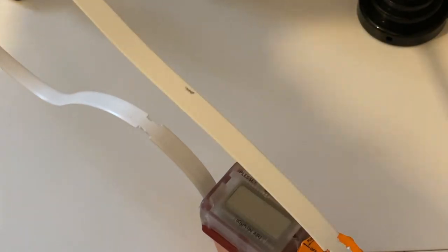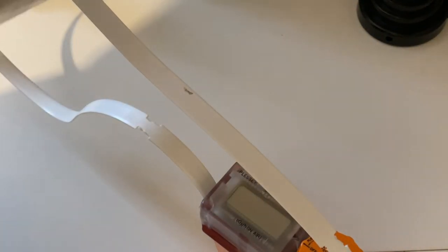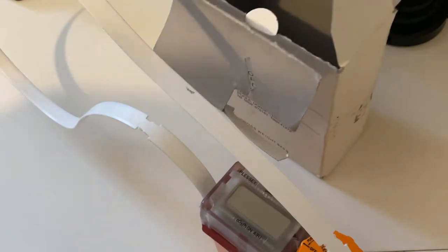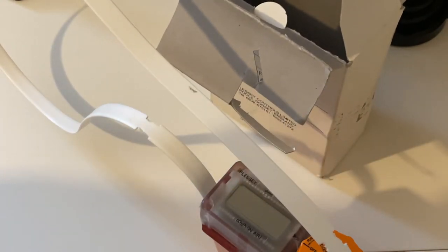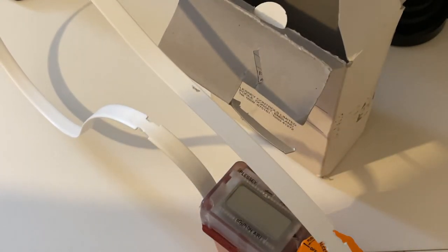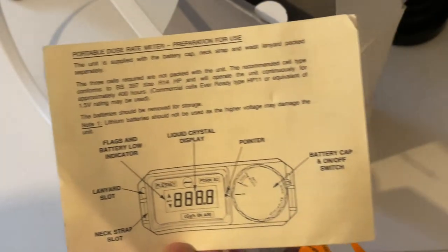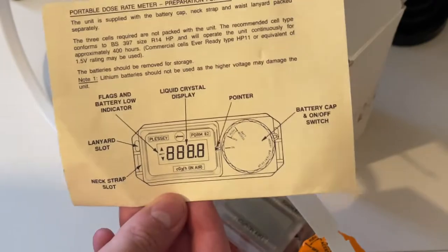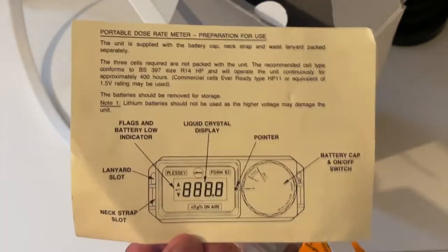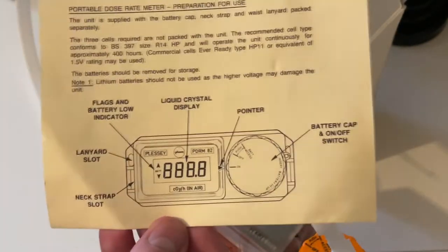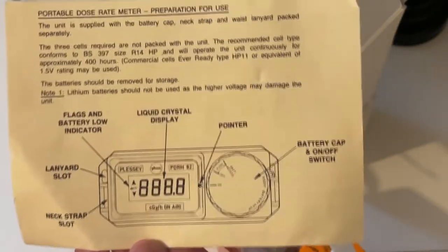What else have we got in the box? We've got the instructions, which are very, very old. This actually might have a date on it. Sadly, I don't think it has a date, but basically tells you like what to do. As you can see, it's very yellow. The paper is very, very yellow. So you can tell it's very, very old.